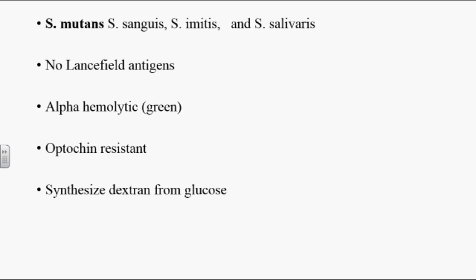Viridans streptococci include a few important pathogenic organisms. The most commonly seen pathogenic organism is Streptococcus mutans. Other organisms that also cause infection in humans are Streptococcus sanguinis, Streptococcus mitis, and Streptococcus salivarius. Among these four, Streptococcus mutans is high yield for board exams. There is no Lancefield antigen for viridans streptococci — no C carbohydrate — making these non-groupable streptococci.